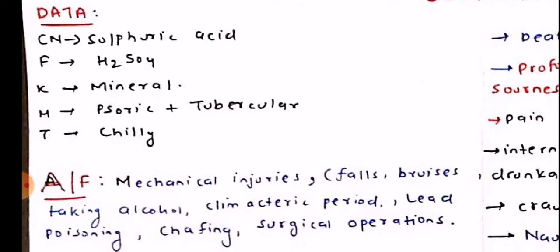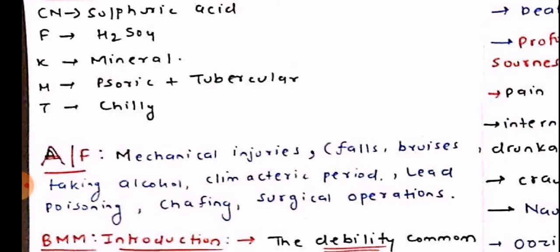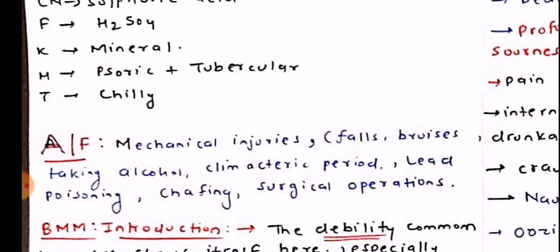Sulphuric acid — common name: Sulphuric acid, formula: H2SO4, kingdom: mineral. The miasms it covers are Psoric and Tubercular, and thermally it is a chilly remedy.